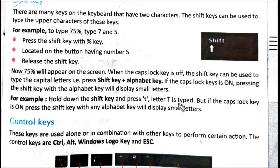For example, hold down the Shift key and press T - capital T is typed. When you hold and press the Shift key and type letter T, capital T will be typed. But if the Caps Lock key is on and you press the Shift key with any alphabet key, it will display the small letter.